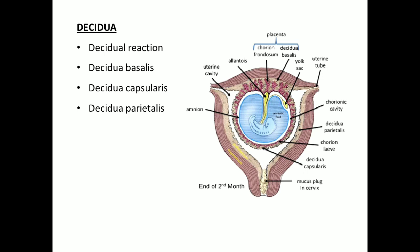Decidua basalis is the part of the decidua at which the placenta is formed. Decidua capsularis is the part of the decidua which separates from the uterine cavity. Decidua parietalis is the rest of the parts of the decidua. So these are the three varieties: decidua basalis, decidua capsularis, and decidua parietalis.